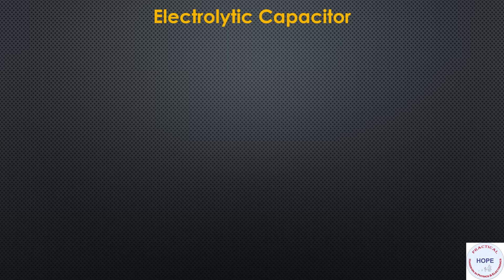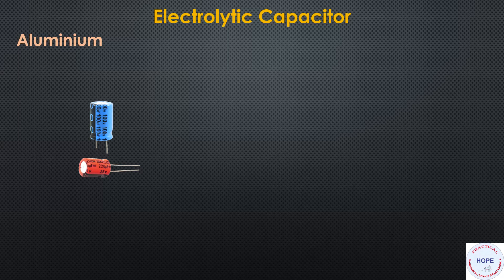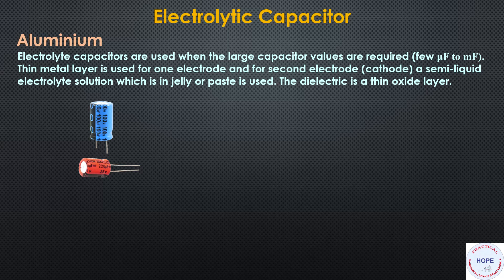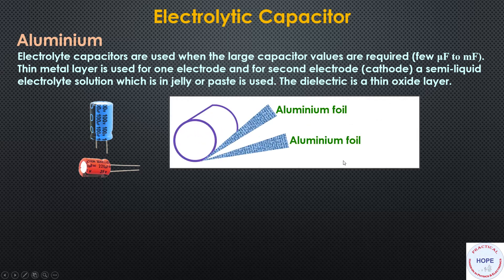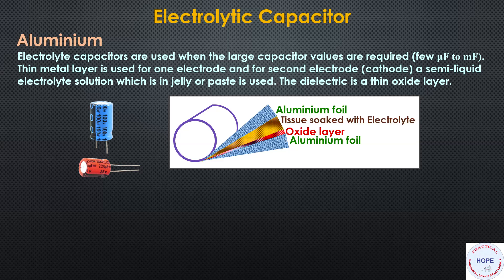Next are electrolytic capacitors, which can be of various types. The first is the aluminum-based electrolytic capacitor. These are used when large capacitance values are required, from a few microfarads to millifarads. A thin metal film or layer is used for one electrode, and a semi-liquid electrolyte solution in jelly or paste form is used for the second electrode. The dielectric is a thin oxide layer — specifically aluminum oxide. The structure comprises two aluminum foils, an oxide layer, a tissue soaked with electrolyte, and a paper separator to prevent short-circuiting when the assembly is rolled into the final capacitor.